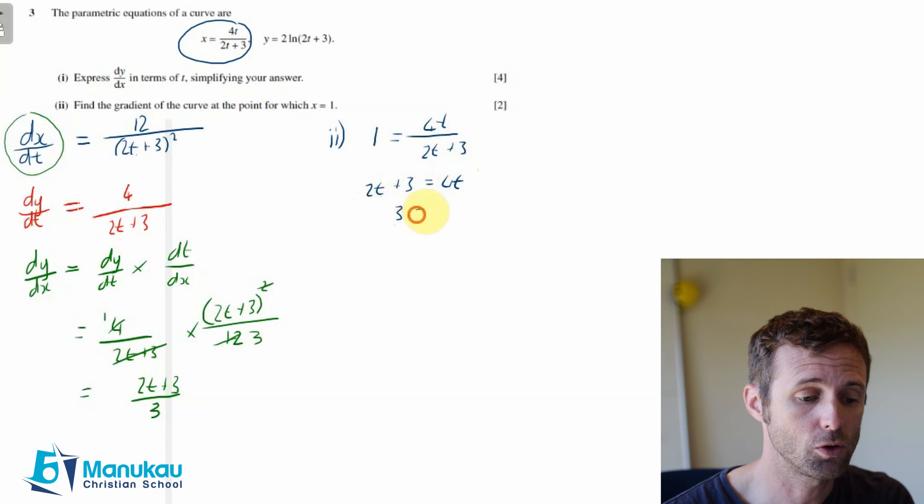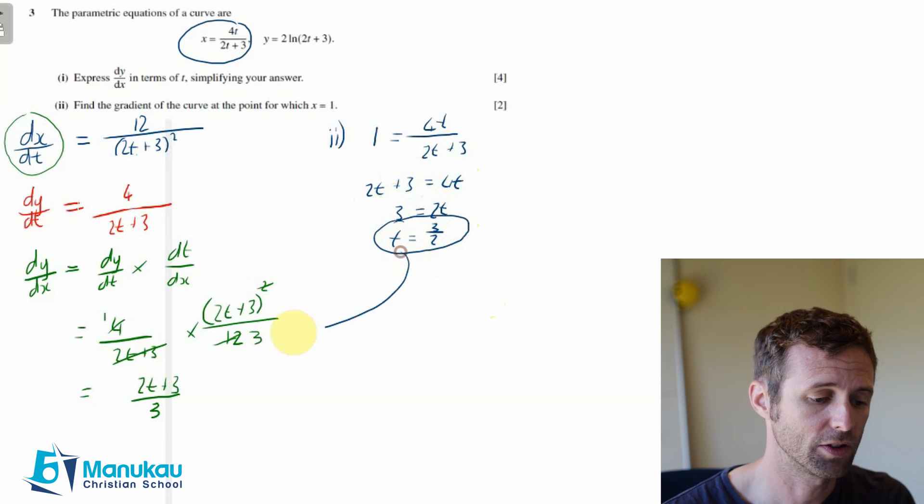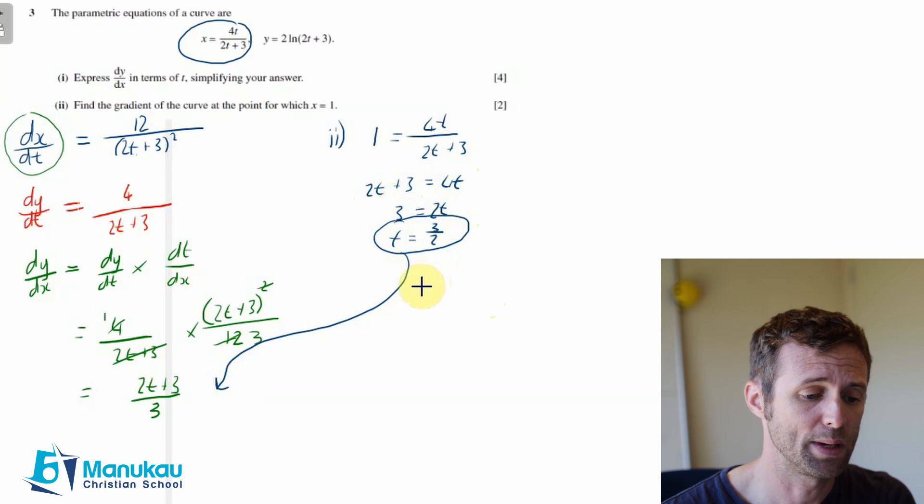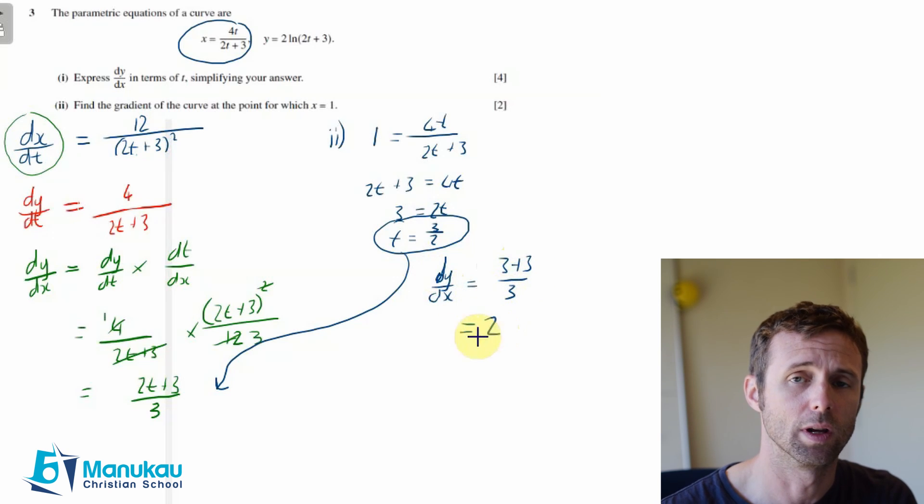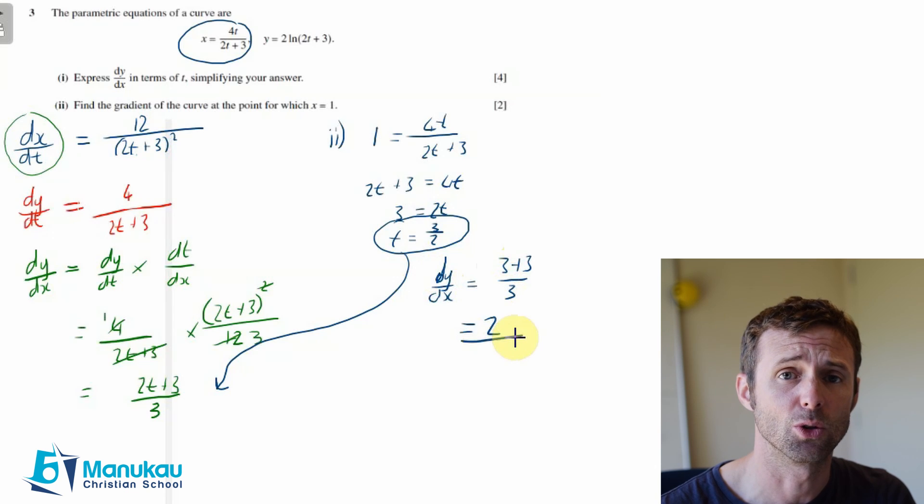I now am going to put this into this equation here. I will get 2 times 3 over 2, which is 3. So dy/dx is going to equal (3 plus 3) over 3, which equals 2. And that will be our gradient of the curve at the point where x equals 1.